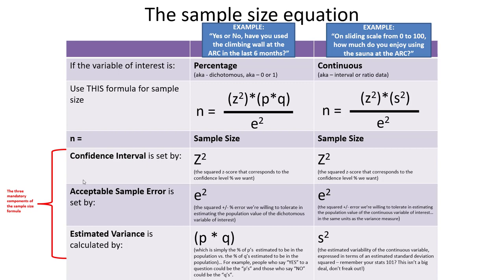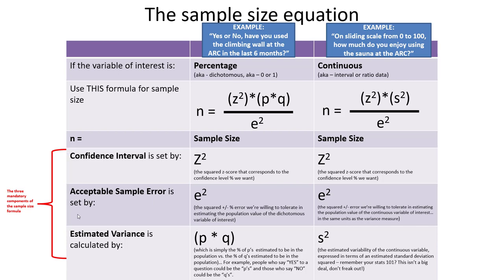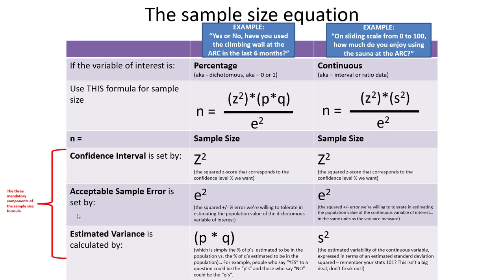For continuous variables, variance is represented as s squared — the estimate of variance, a statistical term from previous statistics courses. The confidence interval and acceptable sample error are values we get to set; the marketing researcher specifies these. On the other hand, estimated variance is something calculated based on our best understanding of what's actually true in the real world.